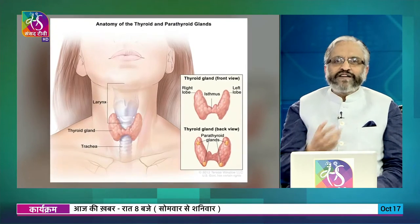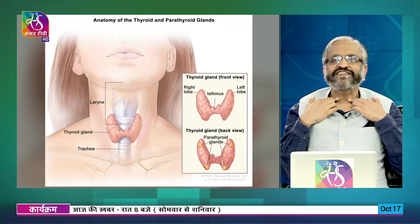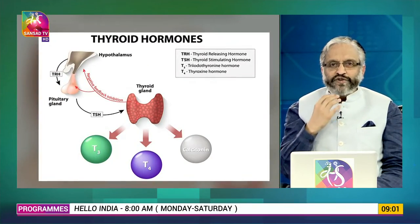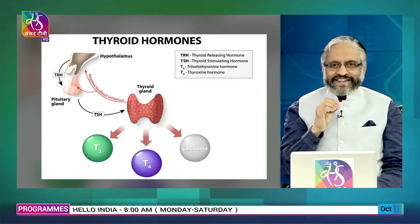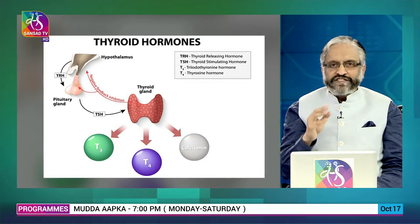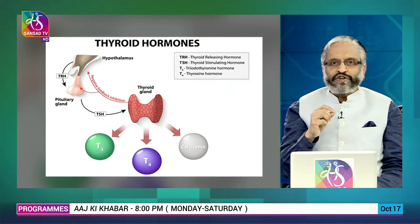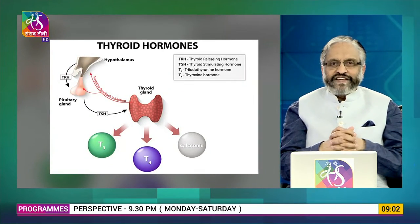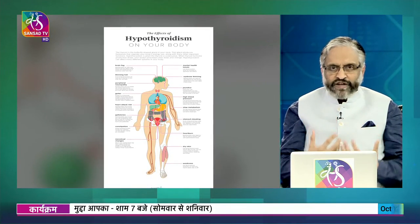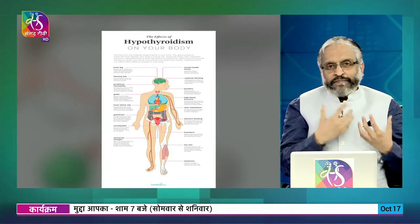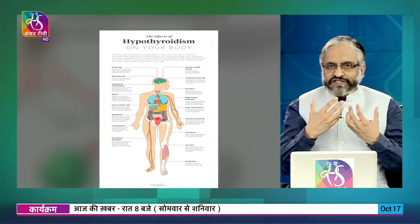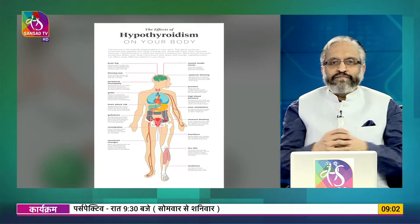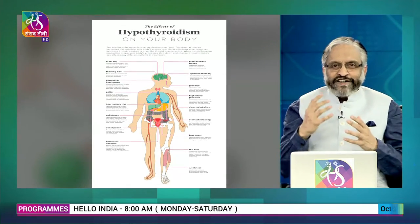The thyroid is a butterfly-shaped gland that straddles our windpipe, the trachea. From here it produces a hormone called T4. That hormone gets converted in the blood or the tissues to another active hormone called T3. This T4-T3 complex is responsible for maintaining our body metabolism - the capacity of the body to utilize all its sources like food and convert them into energy.